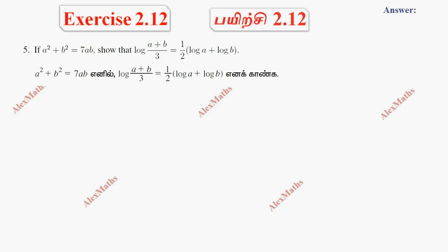Hi students, this is Alex here. Exercise 2.12, question number 5: If a squared plus b squared is equal to 7ab, show that log of (a plus b) by 3 is equal to half of log a plus log b.